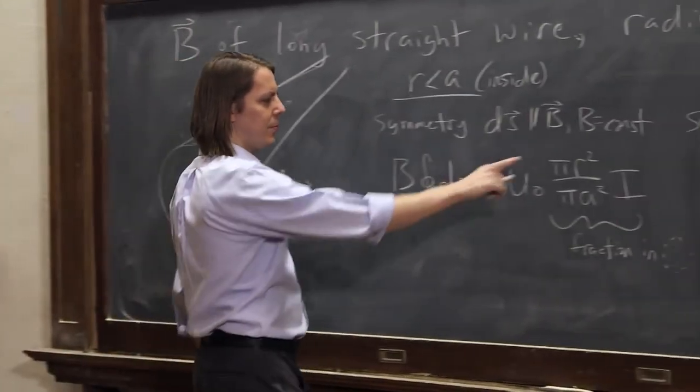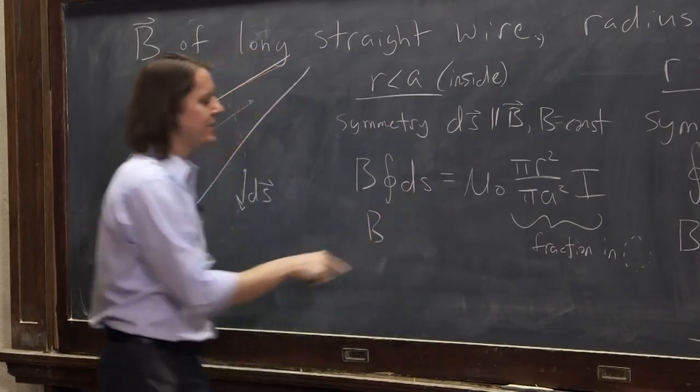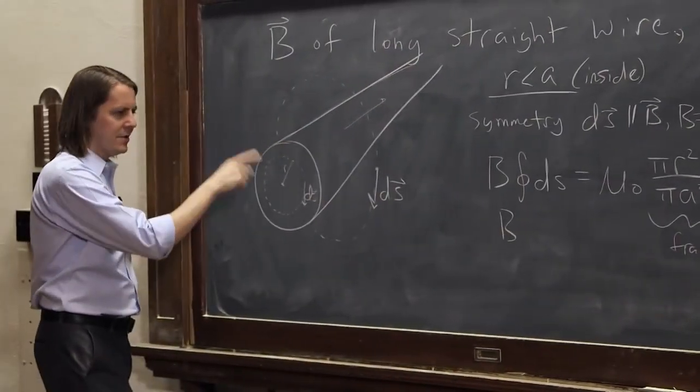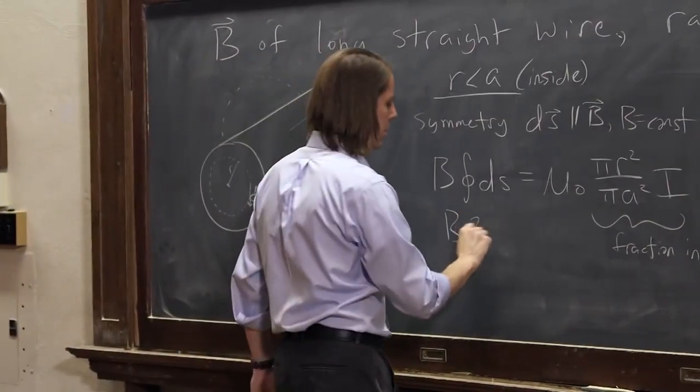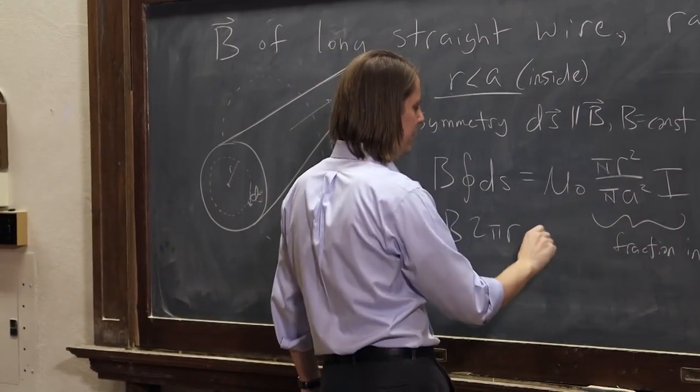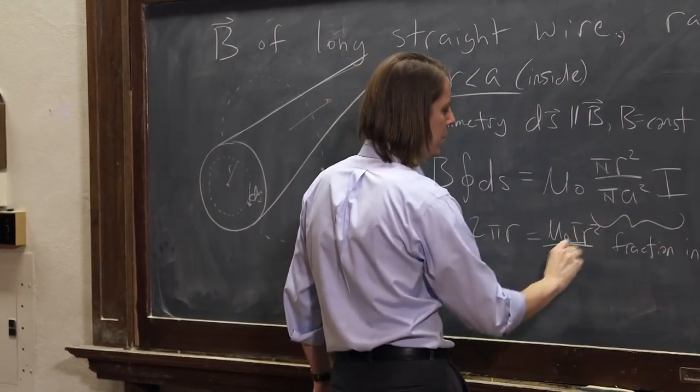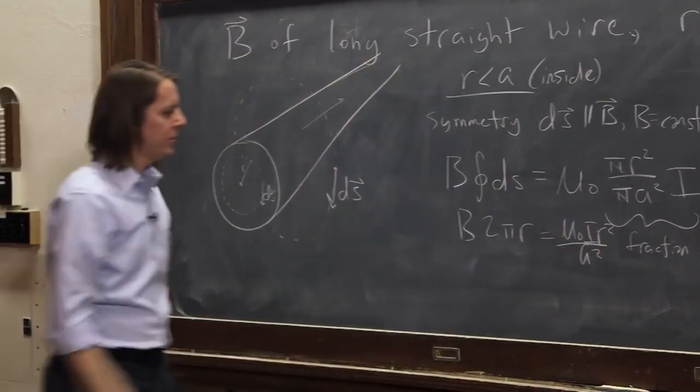And then, let's see. So then what do you got here? Then this becomes B times the integral around dS. That's 2 pi r. Equals here, and then that cancels, and that cancels. It's mu naught I r squared over a squared. And this is getting a little ugly, sorry.